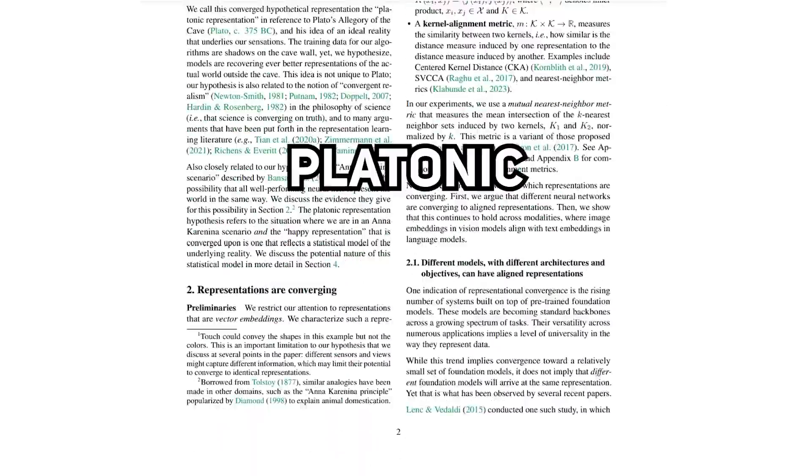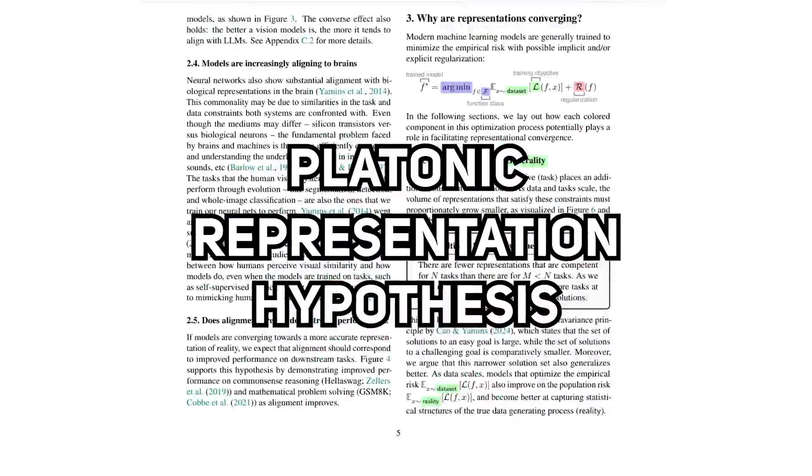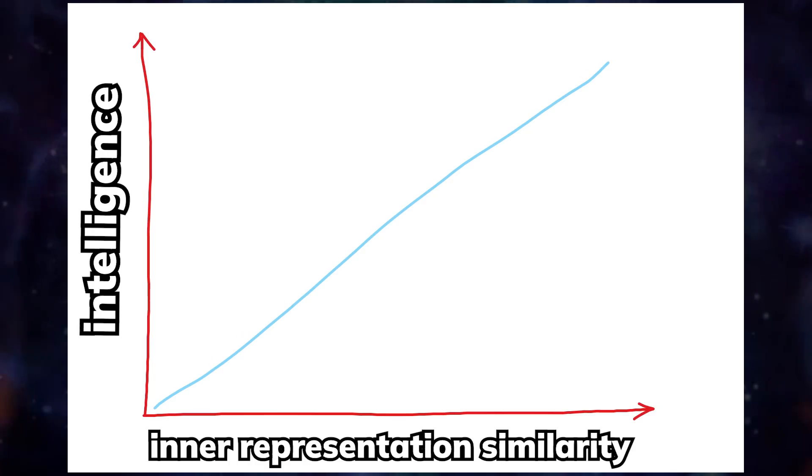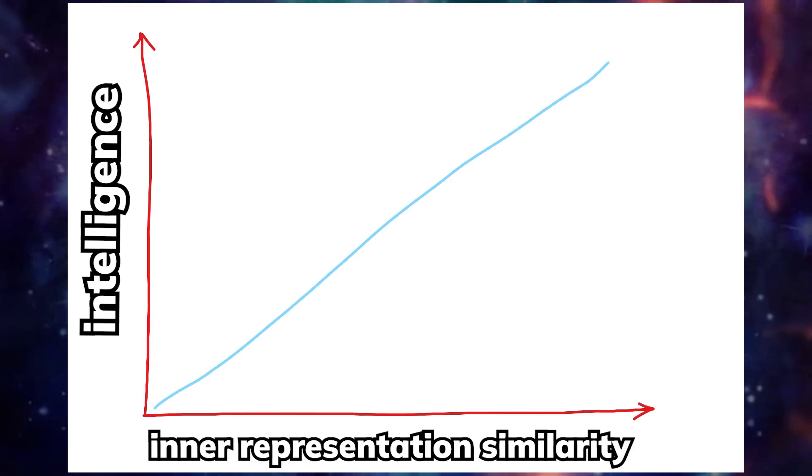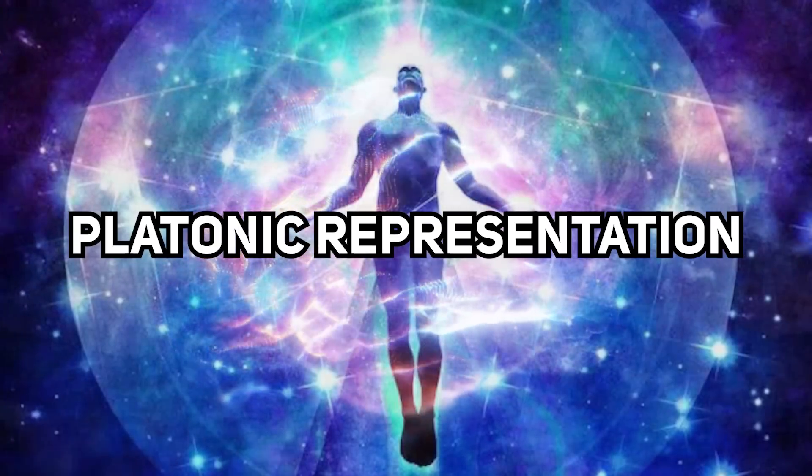As mentioned in a paper called the Platonic Representation Hypothesis that was released a few weeks ago, the authors suggested that the convergence of this inner representation would also become the optimal function of intelligence, called the Platonic Representation.